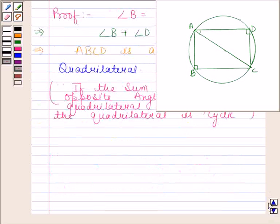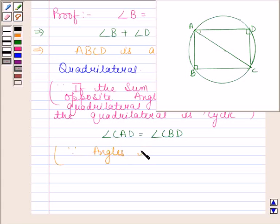Now angle CAD is equal to angle CBD, because these are angles in the same segment, and we know that angles in the same segment are equal.